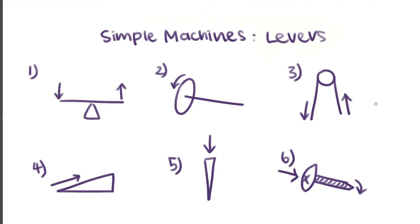Hi everyone, my name is Cassandra and today we'll be going over basic engineering concepts, specifically simple machines — levers. There are six main types of simple machines: levers, the wheel and axle, pulleys, inclined planes, wedges, and screws. Today we'll be going over one of them, which are levers.